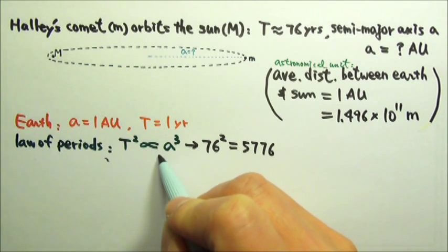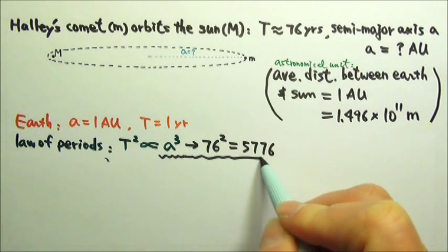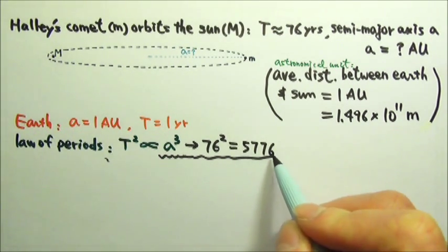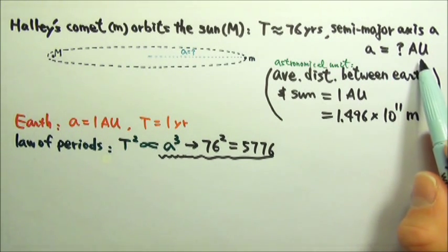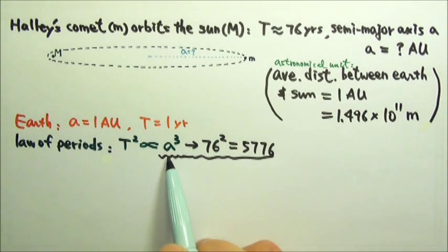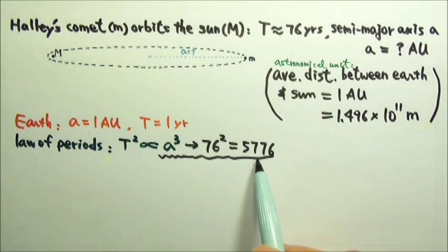This means the semi-major axis cubed changes by the same factor. We want information about the semi-major axis. That means we have to take cubic root on both sides.